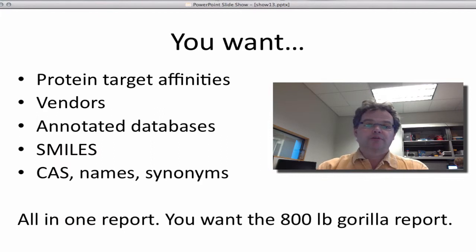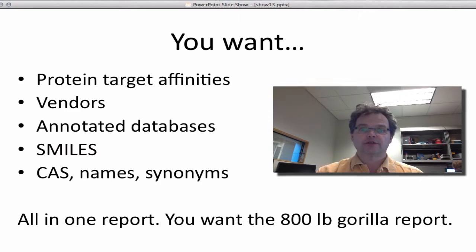So you want, for a particular subset of molecules, you want protein target affinities, vendors, annotated databases, sources of information, SMILES, CAS numbers, names, synonyms. You want an all-in-one report. We call this the 800-pound gorilla report. Let me show you how to do it.